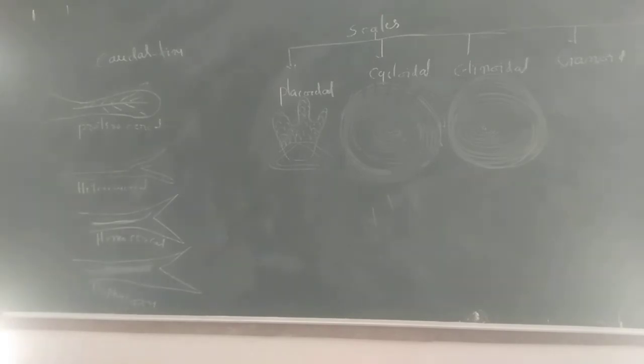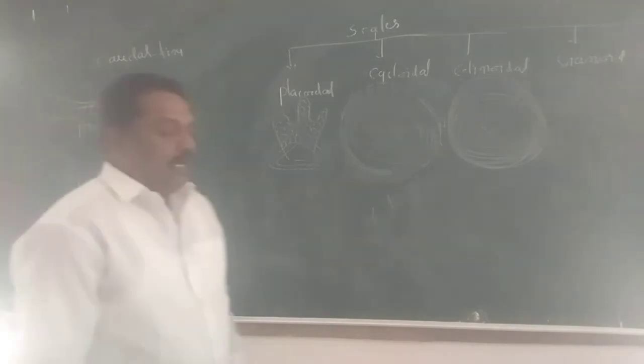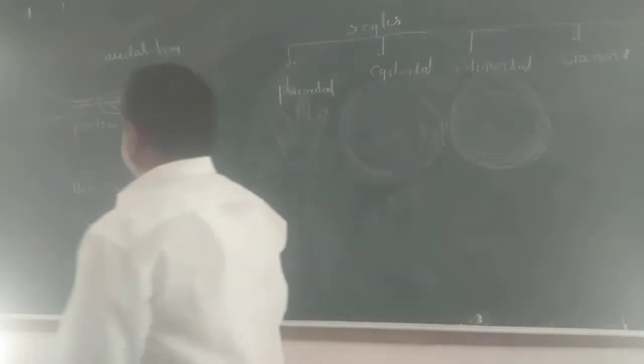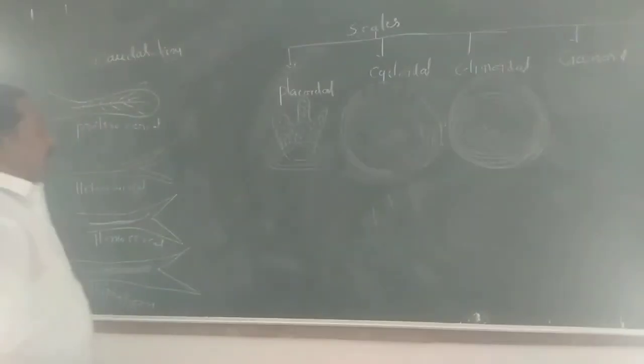Second one is heterocercal caudal fin. In heterocercal, the caudal fin is unequally divided into upper lobe and lower lobe. Generally upper lobe is larger than the lower lobe. In similar fashion, the vertebral column extends into the upper lobe. These are called heterocercal fins.